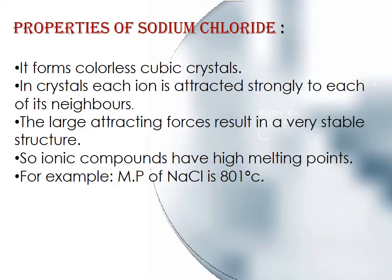In sodium chloride, an ionic bond is present. When sodium loses its electron, chlorine gains that electron, forming the ionic bond. In the crystalline structure, each sodium is surrounded by six chlorine ions and vice versa, forming colorless cubic crystals. Each ion is strongly attracted to its neighbors, producing a very stable structure. Therefore, ionic compounds have high melting points — for example, the melting point of sodium chloride is 801 degrees centigrade.